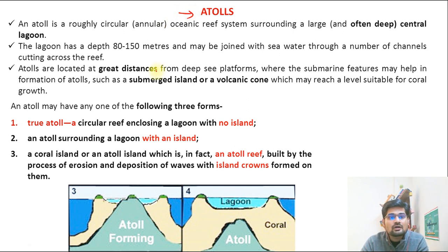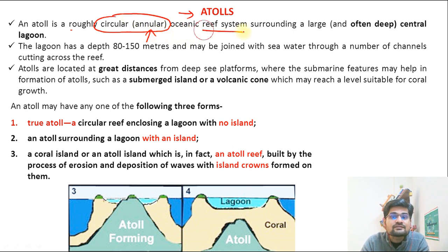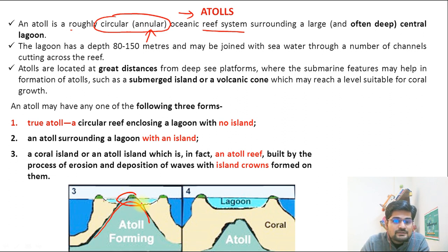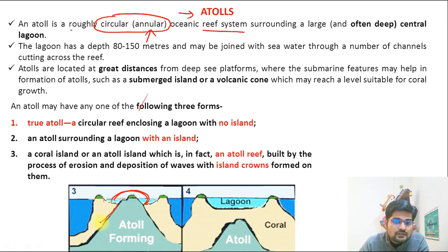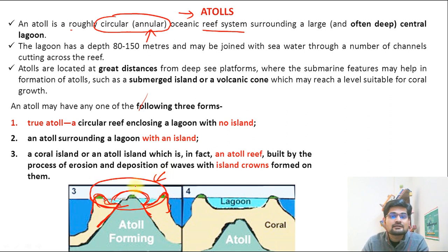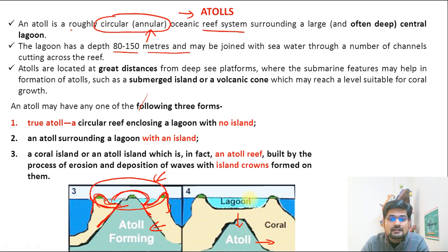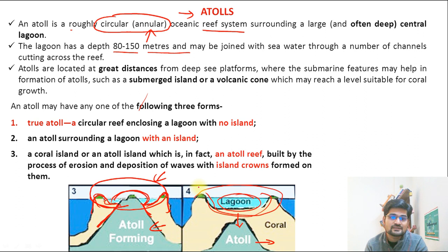The third type is the atoll — a roughly circular, or annular, oceanic reef system. It is circular because it develops on an underlying island. The lagoon is surrounded on all sides by the reef. Looking at aerial images, it looks like a circle with a lagoon at center and ridges of reef all around. Lagoon depth is approximately 80 to 150 meters. In the first stage, atoll formation begins; as the underlying island subsides, the lagoon occupies the center surrounded by the reef.